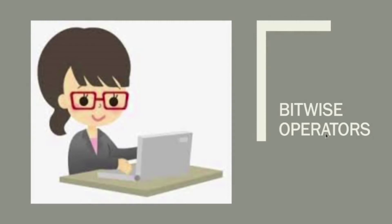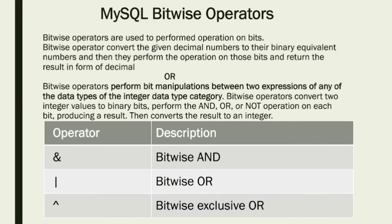Hello everyone, welcome back to my channel. In the previous video I told you about arithmetic operators, so today's topic is bitwise operators. Bitwise operators are used to perform operations on bits. They convert the given decimal number to its binary equivalent and then perform the operation, returning the result in decimal form. Bitwise operators perform bit manipulation between two expressions of integer data type.